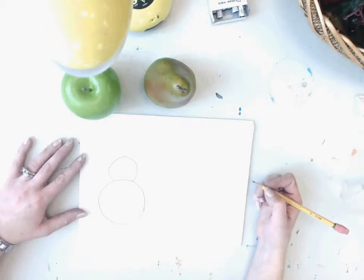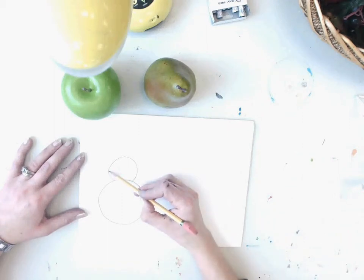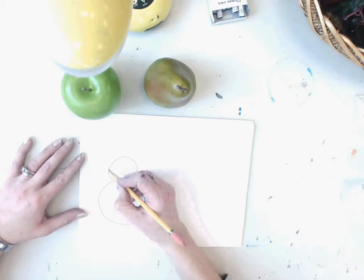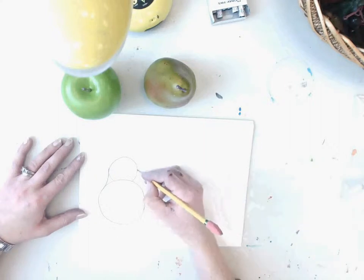The next step is you're going to make a backwards parentheses. The backwards parentheses is going to connect the two circles, and you're going to repeat the process on the other side.